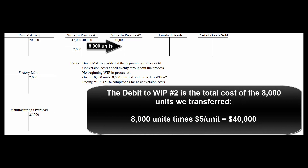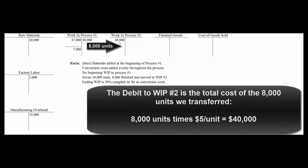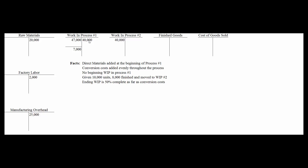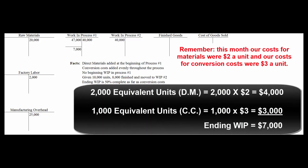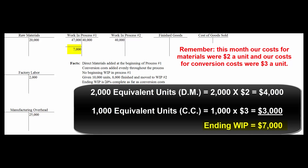Since it cost $5 a unit in process number one and we moved 8,000 units on to process number two, we take $40,000 out of work in process number one and move it to work in process number two. The $47,000 debit balance minus the $40,000 credit leaves a $7,000 debit balance. That $7,000 represents the 2,000 physical units still in process: those 2,000 units are 100% complete for materials (2,000 × $2 = $4,000) and 50% complete for conversion costs (1,000 equivalent units × $3 = $3,000). Four thousand plus $3,000 explains that $7,000 left in ending work in process number one — and that's the basics of process costing.